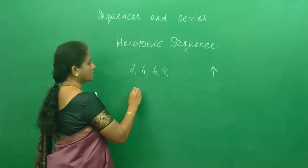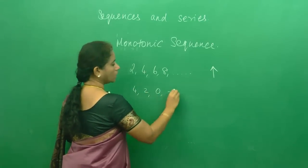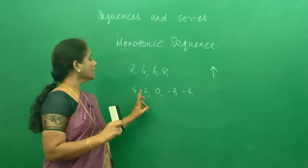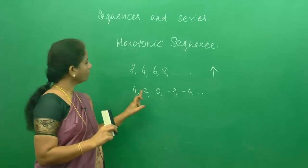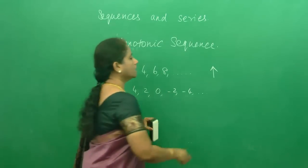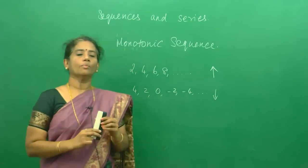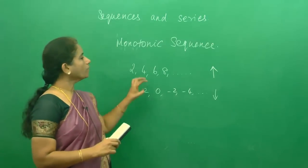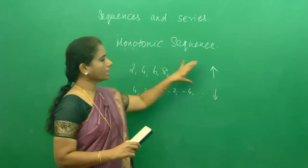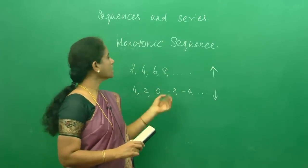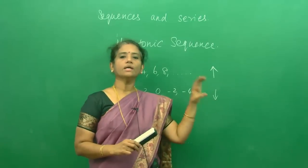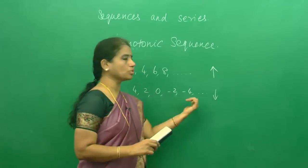Similarly, suppose I have a sequence 4, 2, 0, -2, -4, etc. This is again a monotonic sequence, but the second term is smaller than the first term and the third term is smaller than the second term. So each term goes on decreasing. When the terms go on decreasing, it is called a monotonic decreasing sequence.